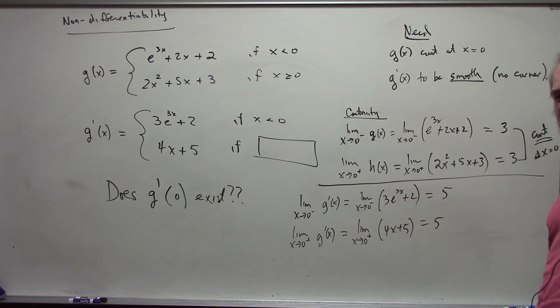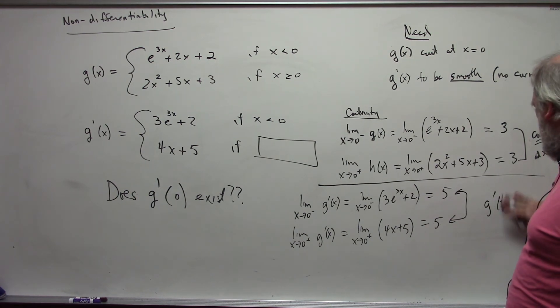Since these match, that means my function is smooth. The derivative exists. There is no problem. Since these match, g prime of 0 is 5. It exists.